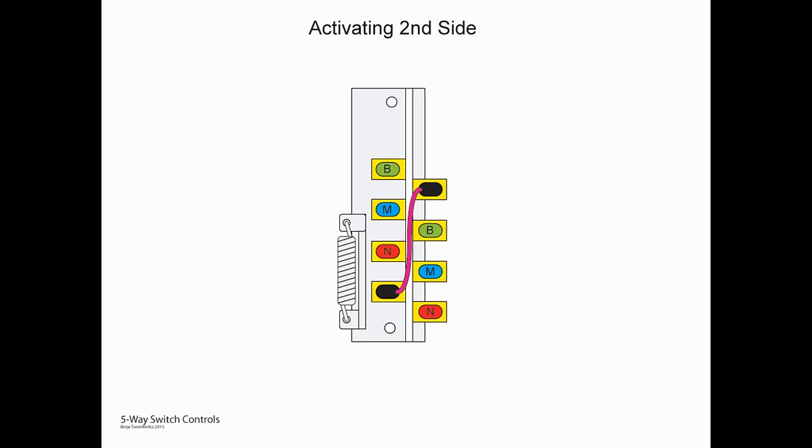I said earlier that a switch is technically two sides, the left side and the right side. If we run a jumper between the two commons, or the bottom lug on the left side and the top on the right side, we will activate the second side of that switch. So you can see now I've changed it so both sides are yellow, meaning both sides are active on this switch. And now we can do some more creative wiring.